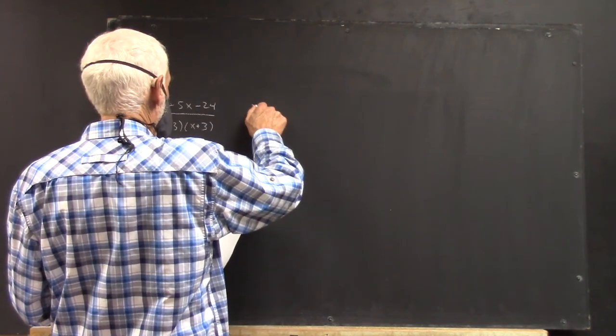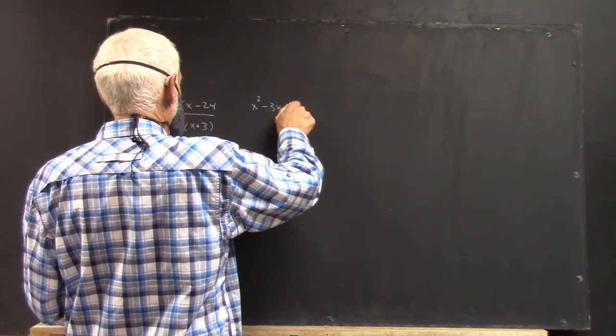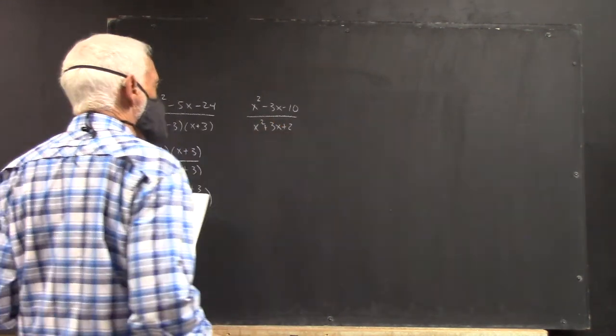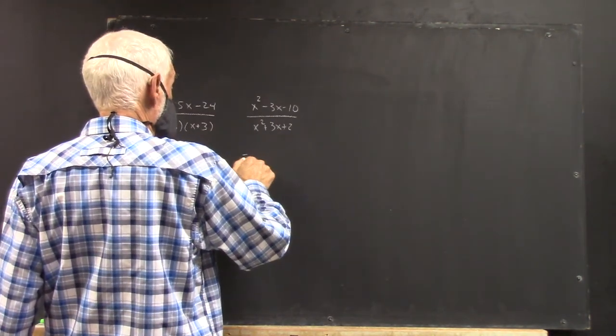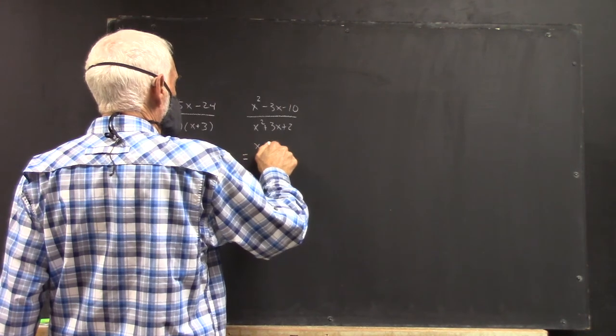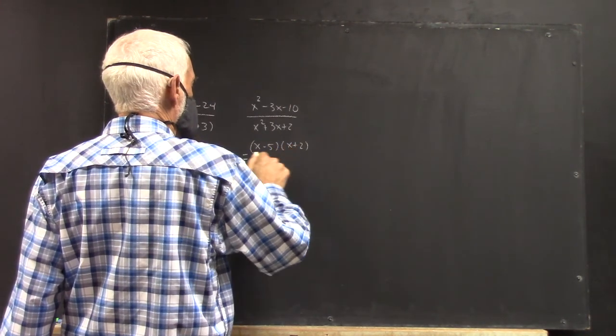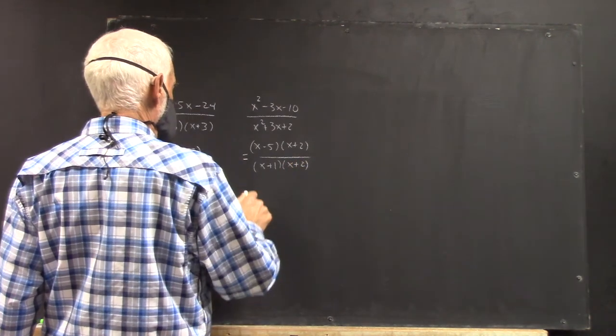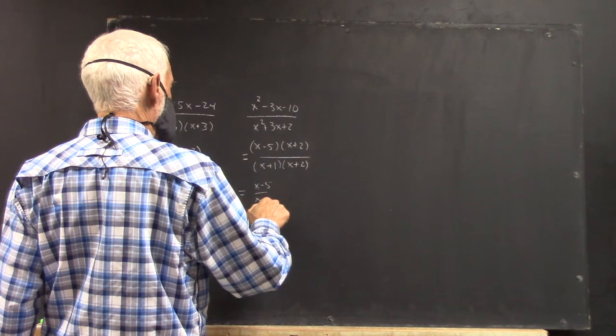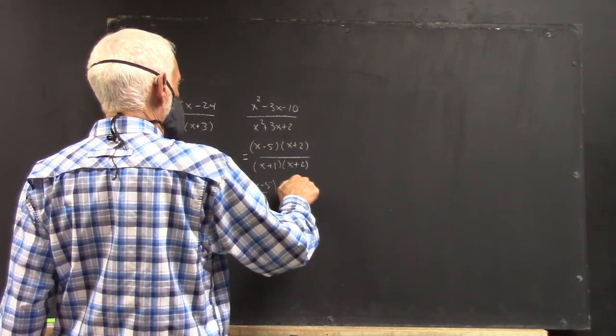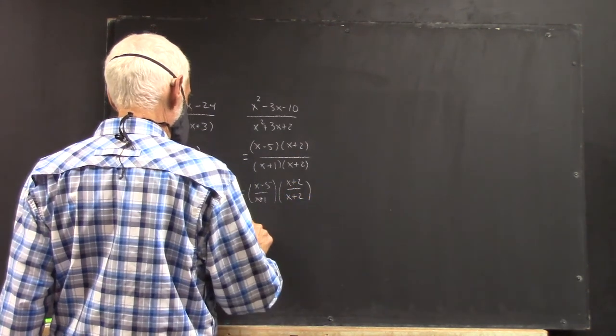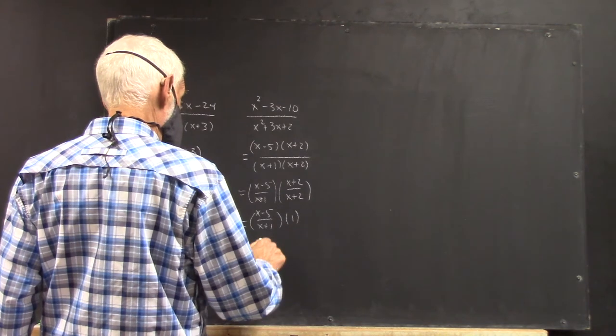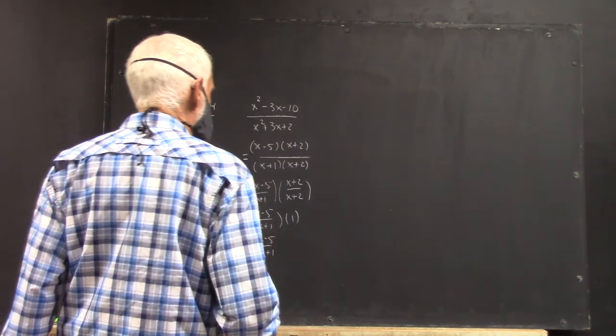This is then x minus 8 over x minus 3. And another one. Here we have it. And now we have to factor both the numerator and the denominator, if possible. Well, the numerator is going to be x minus 5 times x plus 2. The denominator is going to be x plus 1 times x plus 2. And again, that can be written as x minus 5 over x plus 1 times x plus 2 over x plus 2.